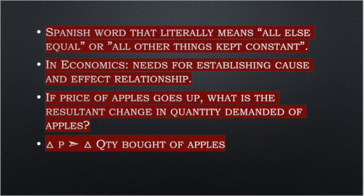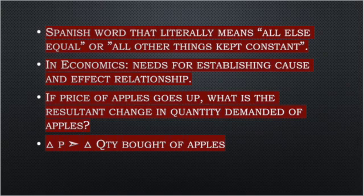In economics, we use economic laws and models to establish a relationship between two variables. These two variables are a cause as well as an effect. But while we do that, all other variables that can also cause the effect are to be kept constant. The idea is to measure the relationship between two variables while other factors are assumed to remain unchanged.